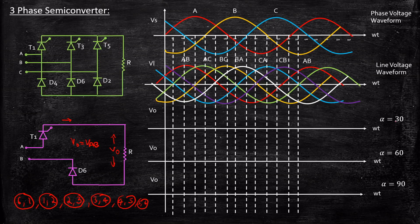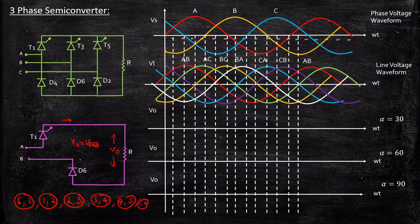When alpha is equal to 30°, we cannot control these circuits below a minimum crossover angle. Below 30° with respect to phase A, all other phases will be reverse biasing the circuit. As a result, we always start from this point — 30 plus 30 equals 60 degrees is where our waveform analysis begins. At 60 degrees, devices 6 and 1 are conducting, so the output voltage follows the line voltage Vab.